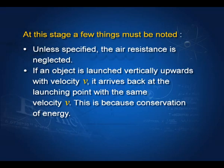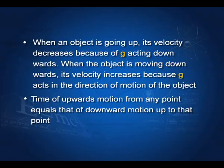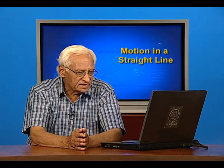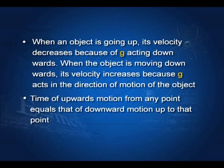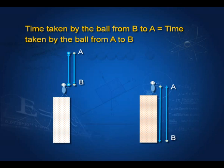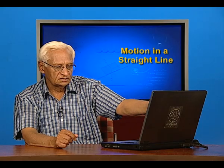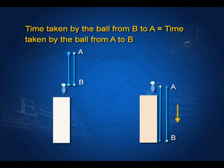If an object is launched vertically upwards with velocity v, it arrives back at the launching point with the same velocity v — because of conservation of energy. When an object is going up, its velocity decreases because of g acting downwards. When moving downwards, its velocity increases in the same direction as the motion. Time of upward motion from any point equals that of downward motion up to that point.